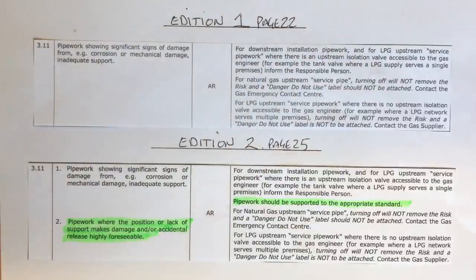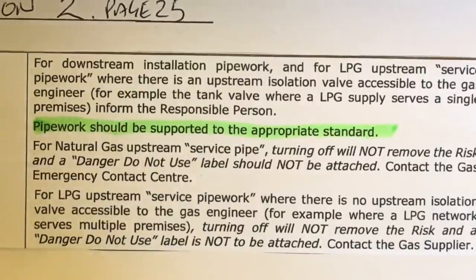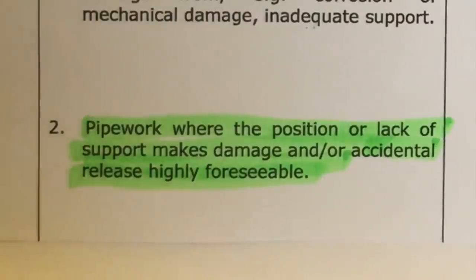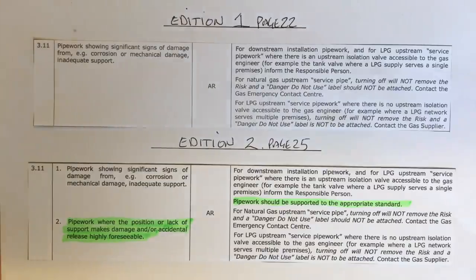The next change is table reference 3.11, where the guidance notes have been revised — highlighted in green. The main addition states that pipework where the position or lack of supports makes damage and/or accidental release highly foreseeable will be classed as 'at risk'. Pipework should be supported to the appropriate standards.